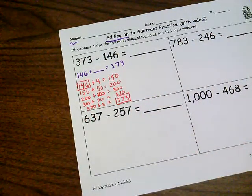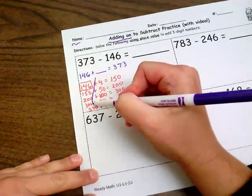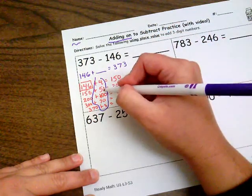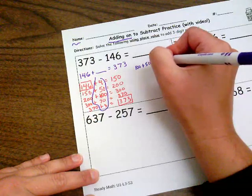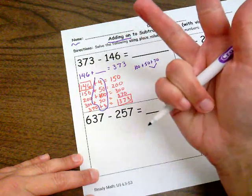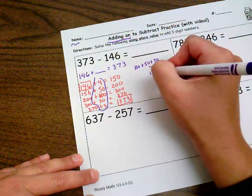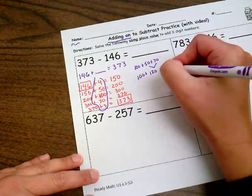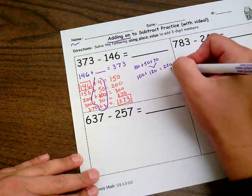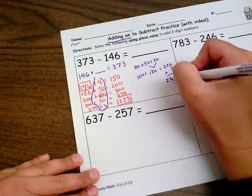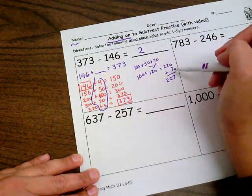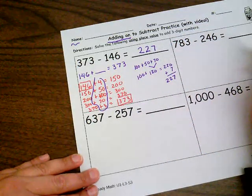I now just need three more to get to 373. So here's my start number right here and my end number. And last but certainly not least, I have to find my final answer. So I've got a 100, a 50, and a 70. So 70, 80, 90, 100, 110, 120 plus another 100 is 220. And now I've got my four and my three, which is seven.